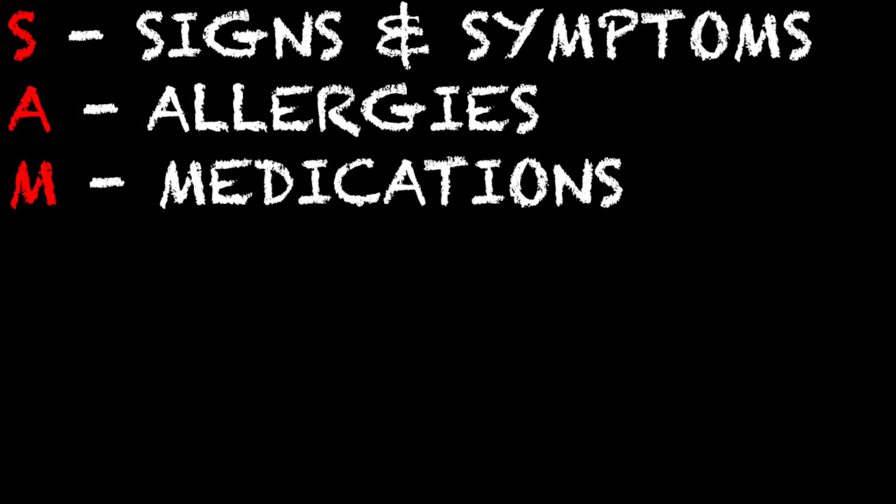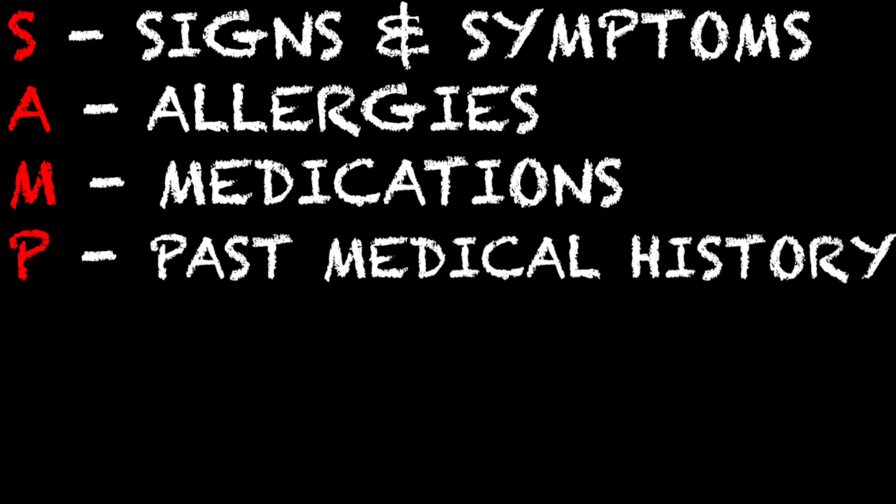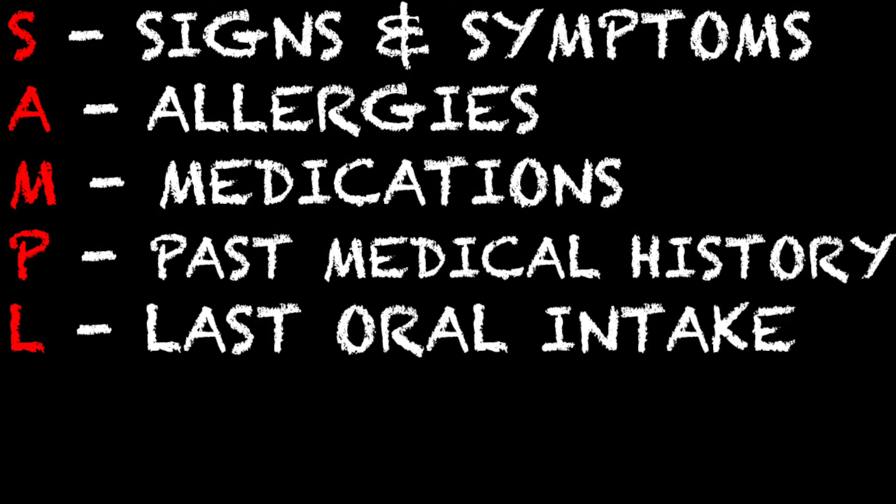The M stands for medications — you want to ask your patient what kind of medications do you take daily. And the P stands for past medical history. What is going on with this patient? Do they have diabetes? Do they have hypertension? What have they been hospitalized for? What types of surgeries have they had in the past? What do they take medication for? All these are good questions to ask.